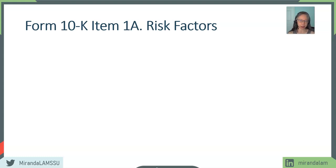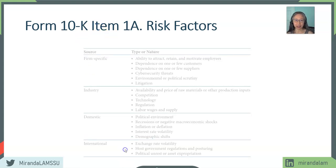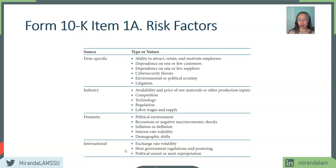This is actually very important. Companies are required by law in their audited financial statement to list all important, relevant, and material risk factors. This is located in Item 1A. So be sure to research that and also take a look at that in detail. We can generally classify risk factors into four categories.